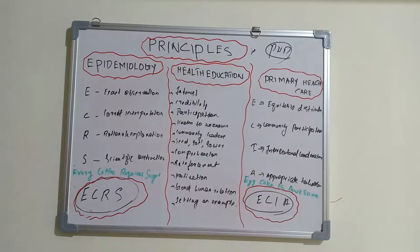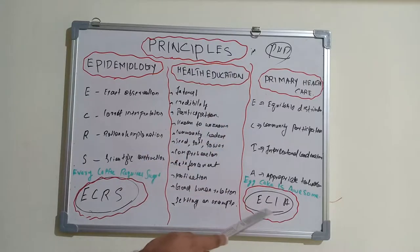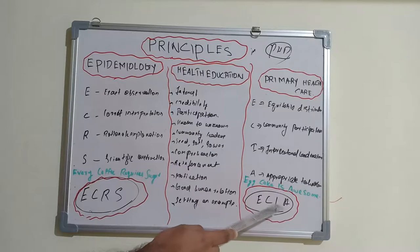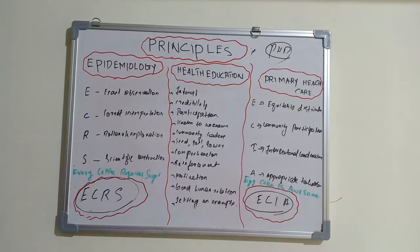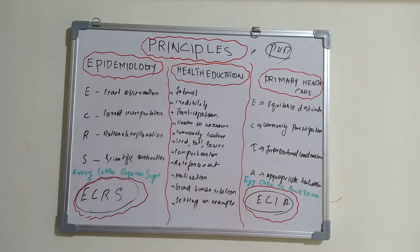The short form is ECIA. The mnemonic I made is 'joining egg cake is awesome.' So egg is for equitable distribution, cake is for community participation — this is just a tip to remember the principles: equitable distribution, community participation, intersectoral coordination, and appropriate technology.